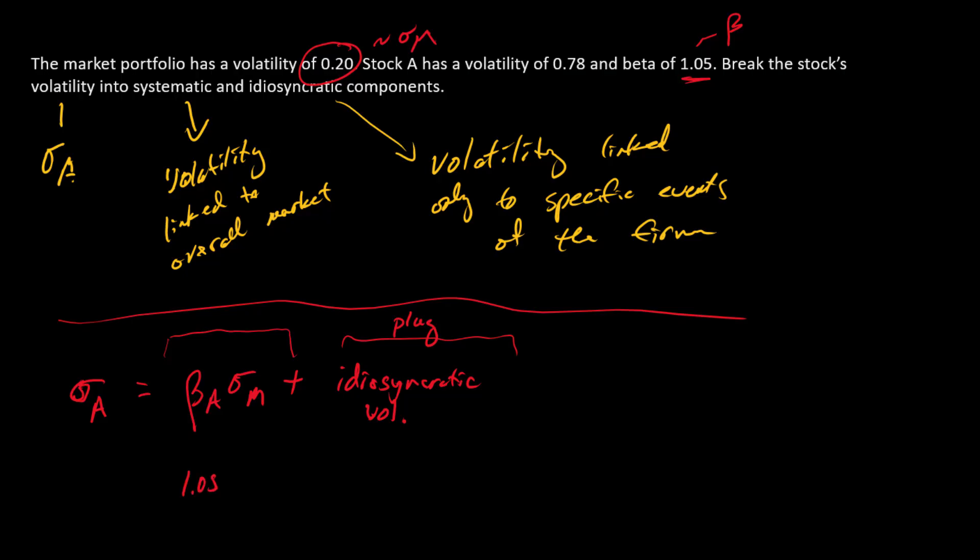So 1.05 times 0.20, that's going to equal stock's total volatility, so there's sigma A, so 0.78 is here. And then this is going to be the plug for the idiosyncratic volatility. So we just need to calculate these amounts, and we will be done.